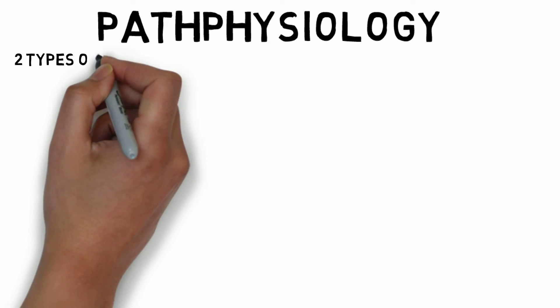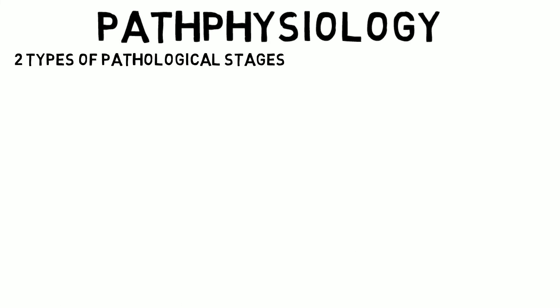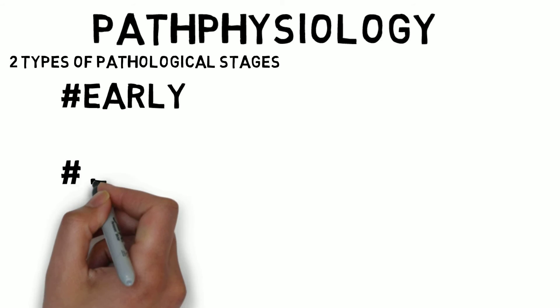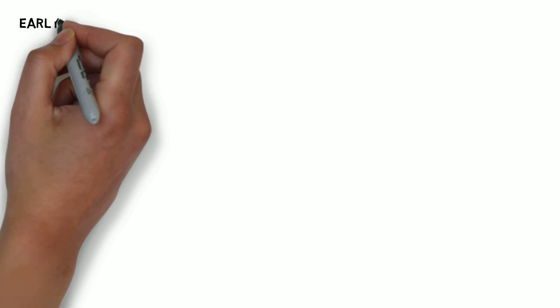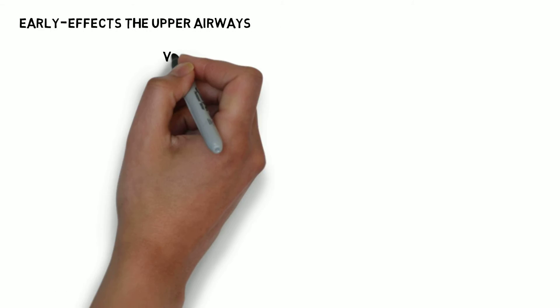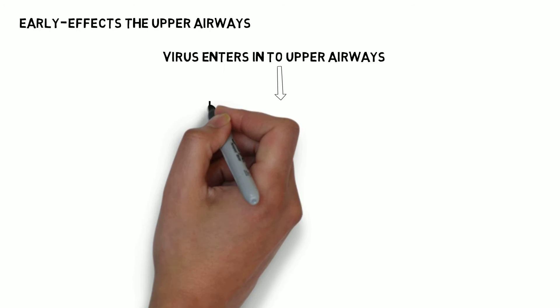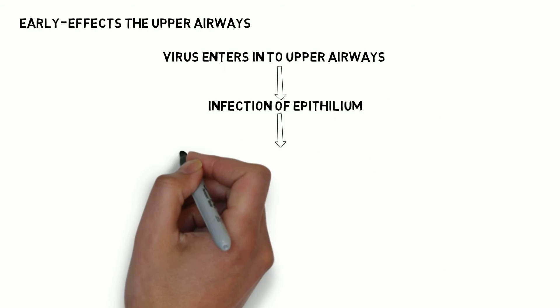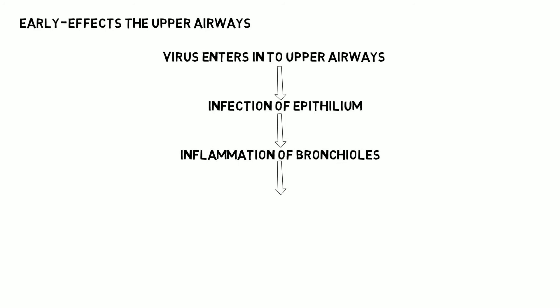Pathophysiology of Bronchiolitis. There are two stages: early and late. Early affects the upper airways, whereas late affects the lower airways. In the early stage, the virus enters the upper airways, causing infection of the epithelium, which leads to inflammation of the bronchioles and ultimately the appearance of symptoms.